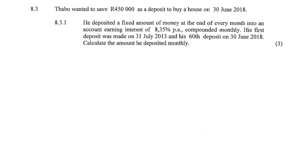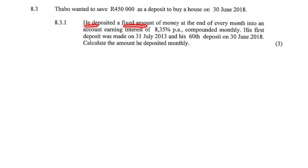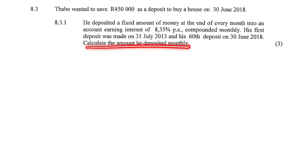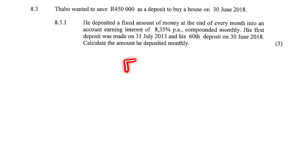8.3. Tupper wanted to save 450,000 Rand as a deposit to buy a house on the 30th of June 2018. 8.3.1: He deposited a fixed amount of money at the end of every month into an account earning 8.35% per annum compounded monthly. His first deposit was on the 31st of July 2013 and his 60th deposit on the 30th of June 2018. Calculate the amount deposited. You need to figure out whether it's the F or P equation on the formula sheet. Because this money is growing into the future starting at the previous date, it is the F equation — the future value annuity. Remember it as F for future.